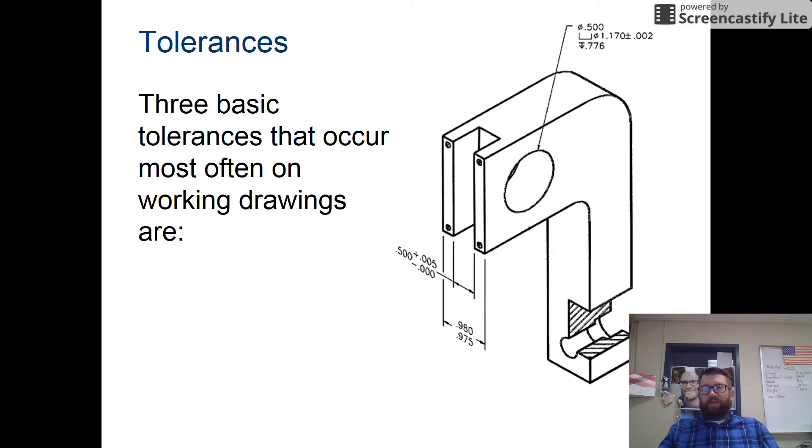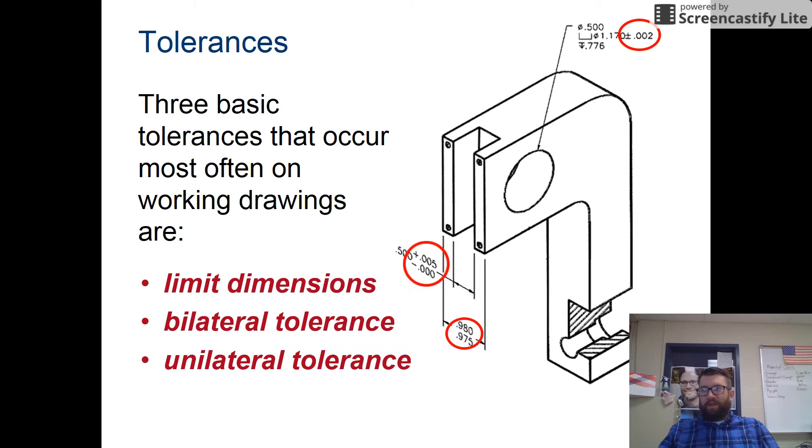There are three basic tolerances, and those are limit dimensions, bilateral tolerance, so you have a plus-minus, and then unilateral tolerance, where you have a plus on one side and then a zero on the other side. We'll talk about where each one of those should be used.